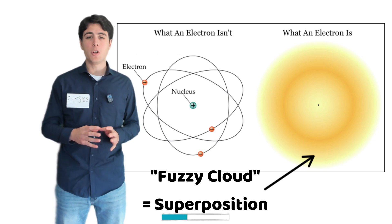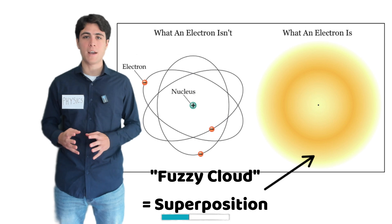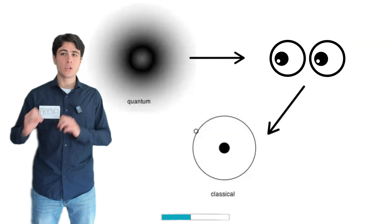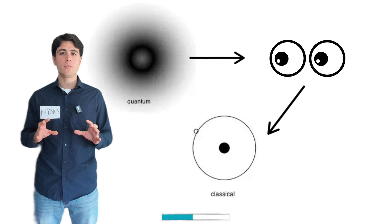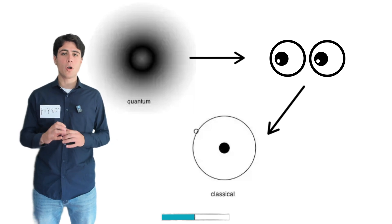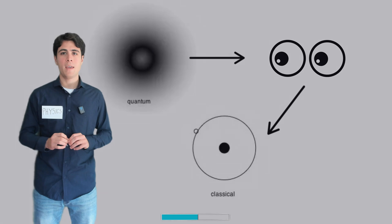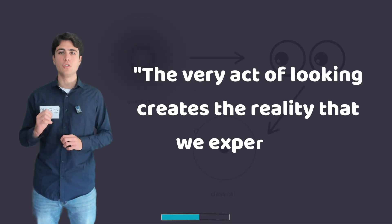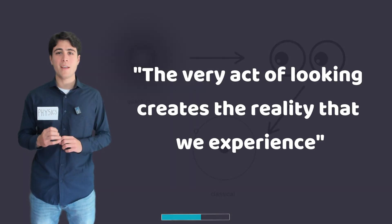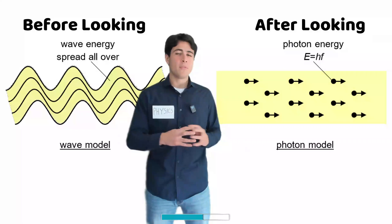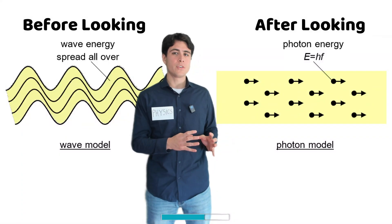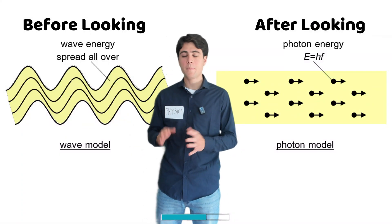Meaning they are in multiple places at the same time. But the moment we observe the particle, this cloud of possibility collapses, and the particle chooses one definite position to be in. It's as if the very act of looking creates the reality that we experience. Before we look, everything is uncertain. But once we observe it, boom, everything is locked into place.